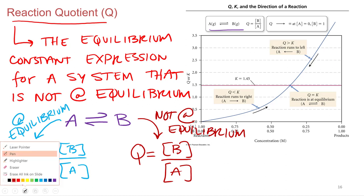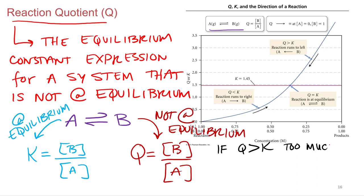So if Q is greater than K, that means this value, the ratio of products over reactants, is larger than this ratio of products over reactants. That means we have too much product, or our concentration of products higher than it should be at equilibrium. So if we have more product bumping into each other, that means the reverse rate is higher. So the reverse rate's going to go until the forward rate catches up with it.